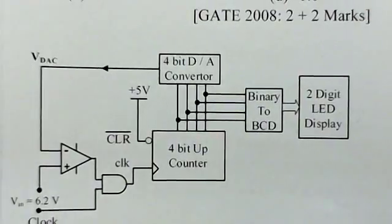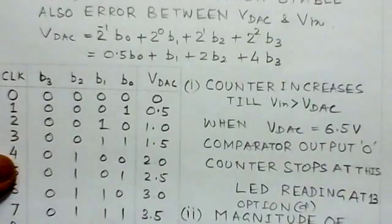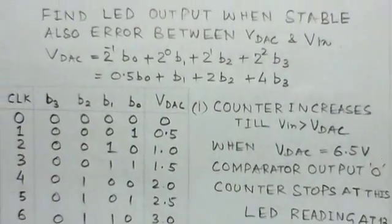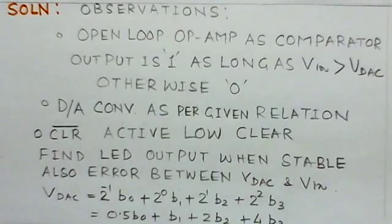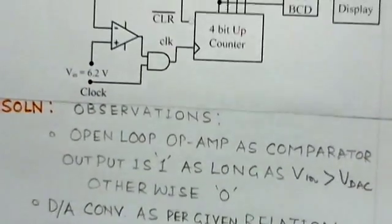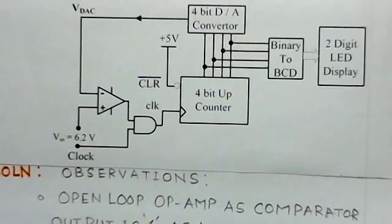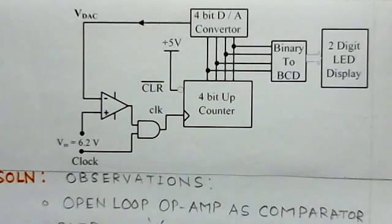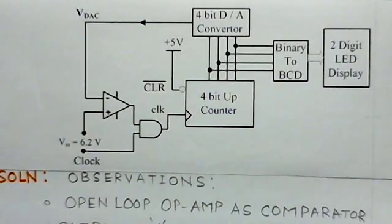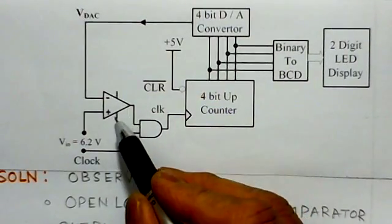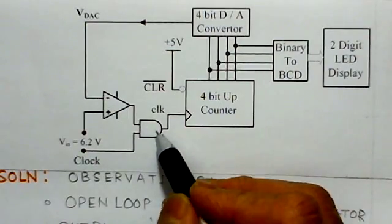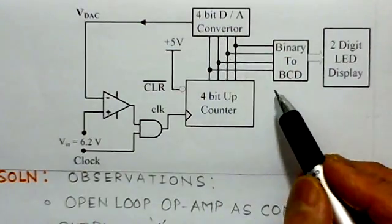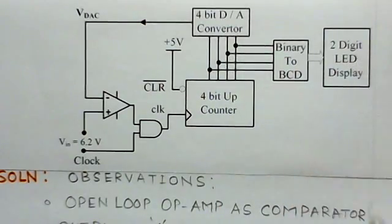So let us see how we get the solution to this problem. Now we will again keep this diagram with us. This is the entire diagram here that we have already discussed. This diagram having different parts like comparator, this is AND gate, this is 4-bit up counter, this is 4-bit DA converter, and binary to BCD and 2-digit LED display.